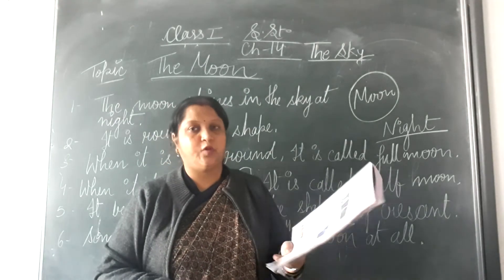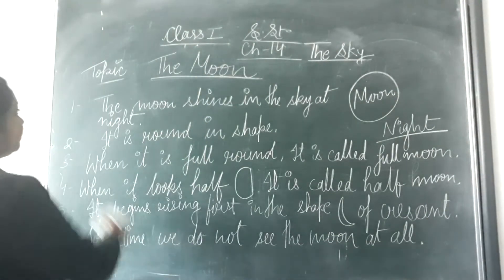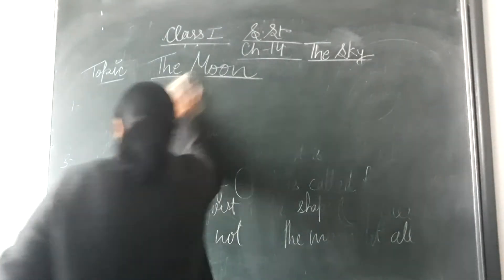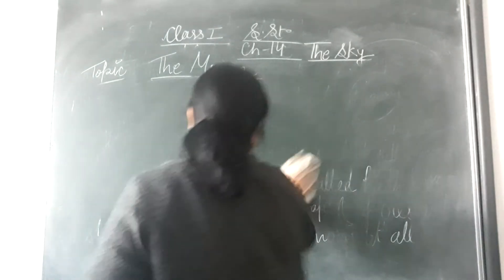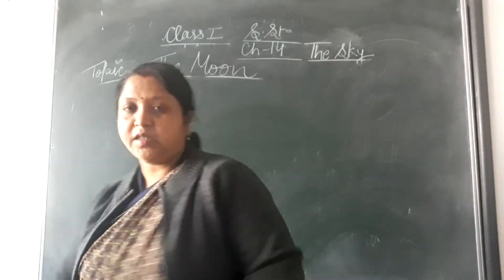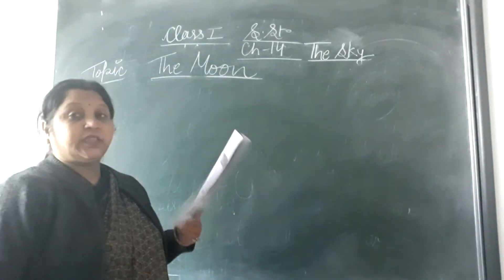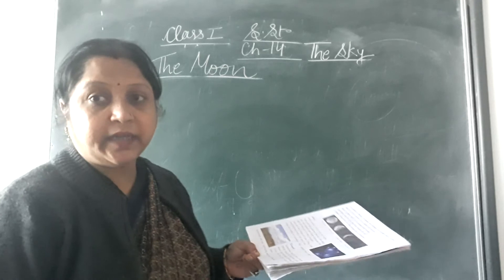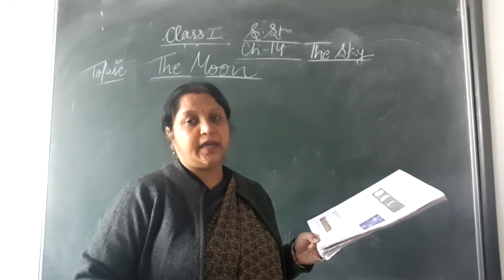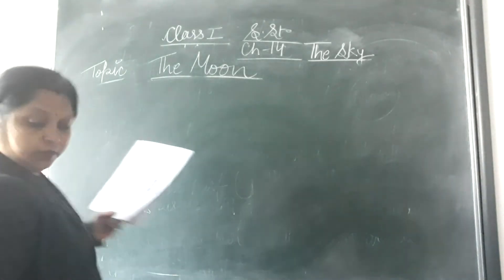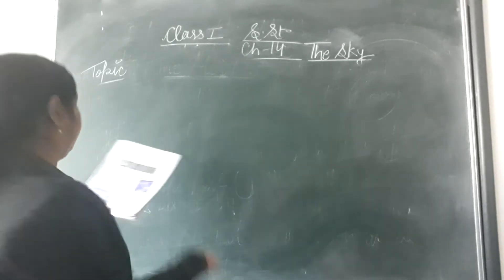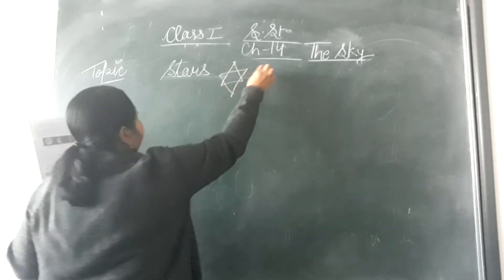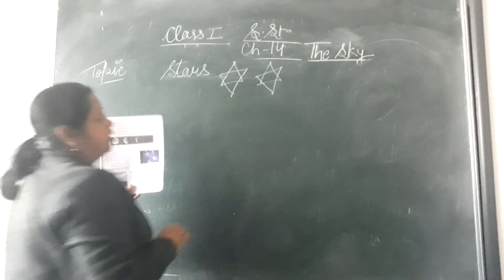Now see the next topic — it is Stars. Twinkle, twinkle, little star. Stars twinkle in the sky at night. The stars are very far from us. The stars are like the sun — they have their own light. That's why, even though they are very far, they shine and are visible.